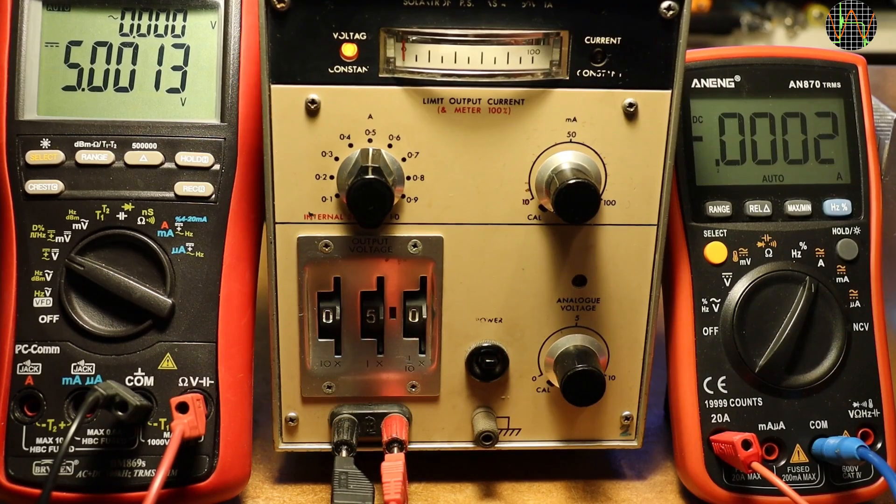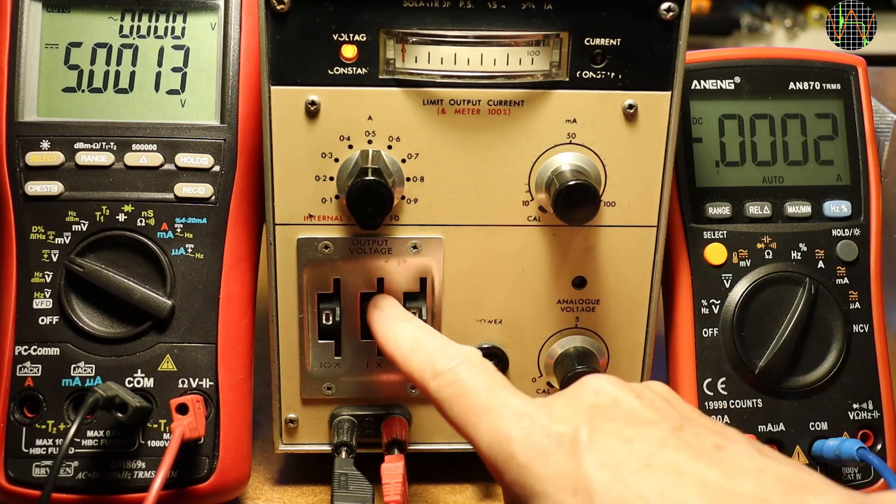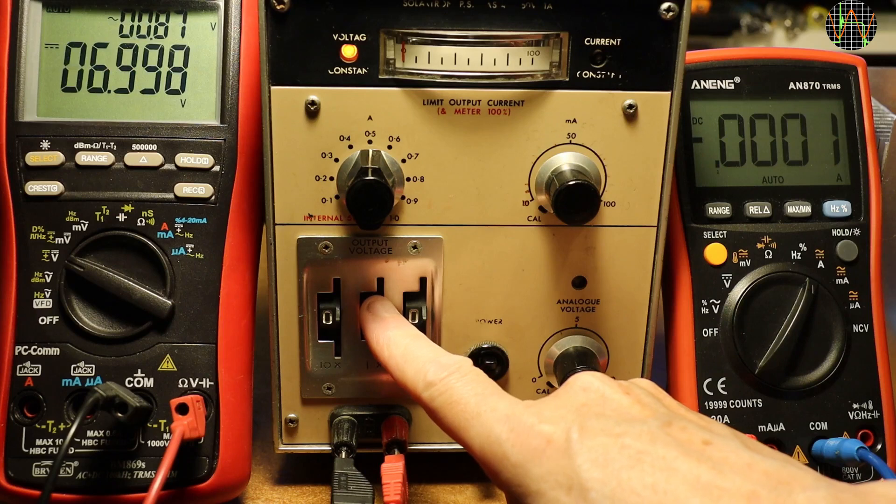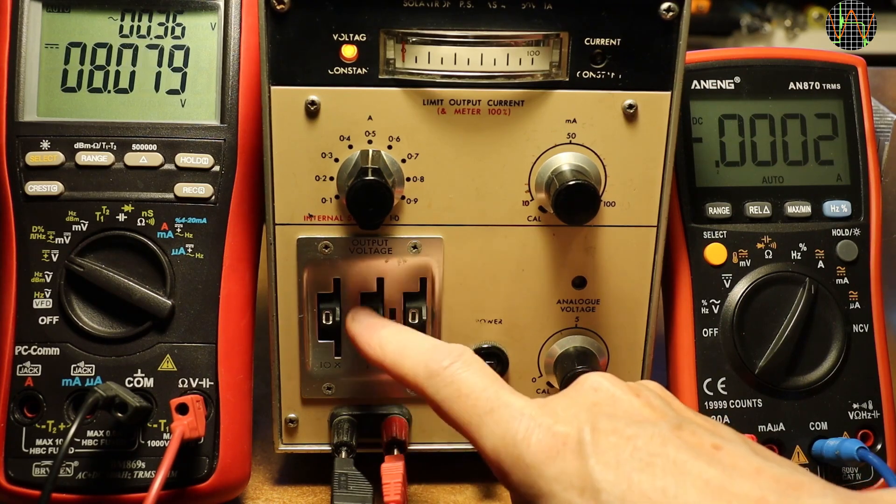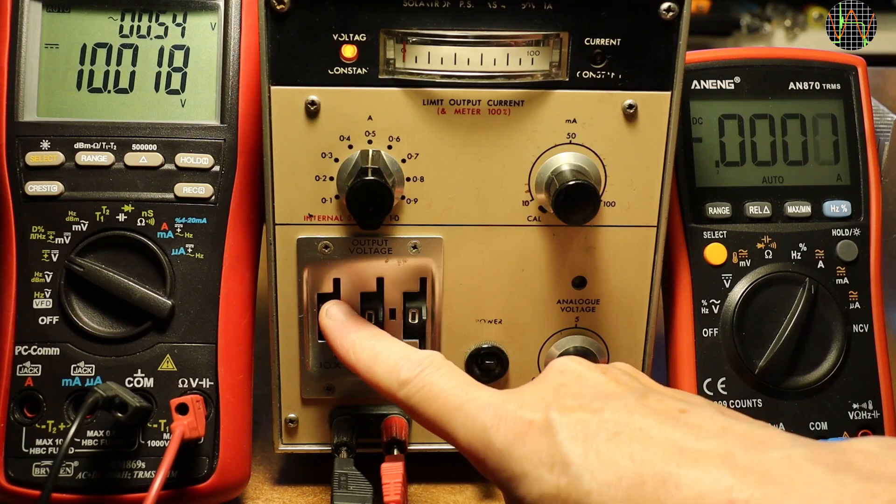A quick demonstration. The voltage is set to 5V on the thumb wheels and that is what the meter on the left shows. The current limit is set to 0.5A when it comes and all pots are in the cal position so it can be ignored. No load is plugged in so no current is flowing. In that state, only the constant volt light is on. I can change the voltage using the thumb wheel for example to 40.1V.